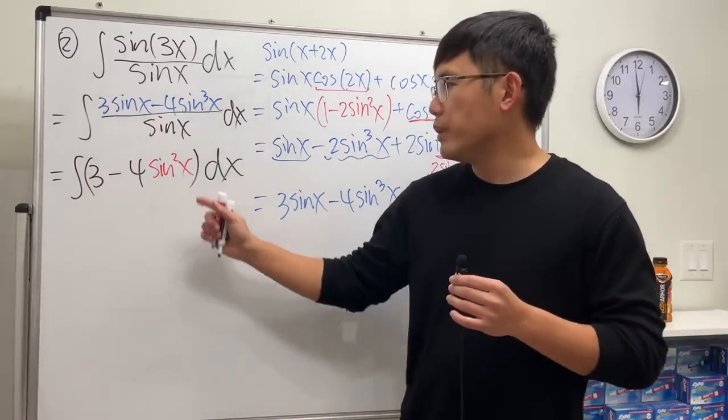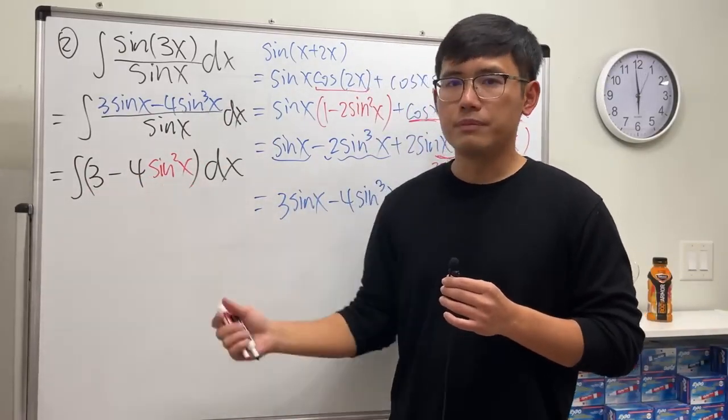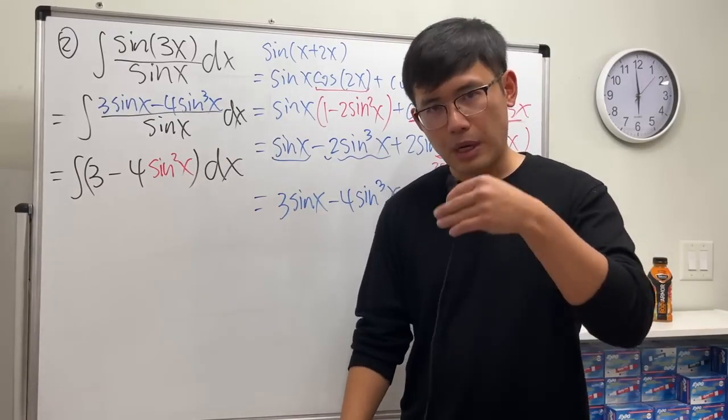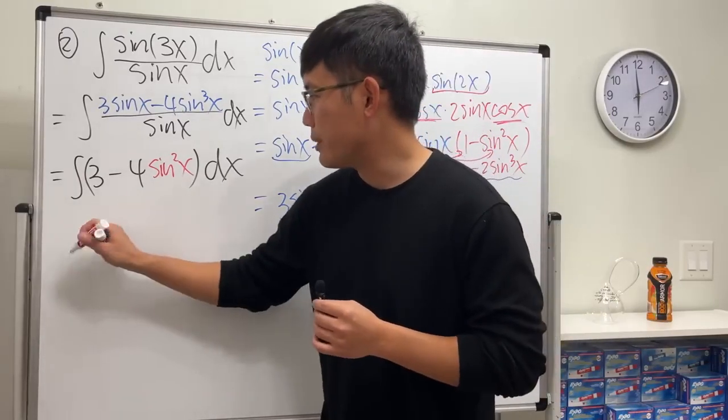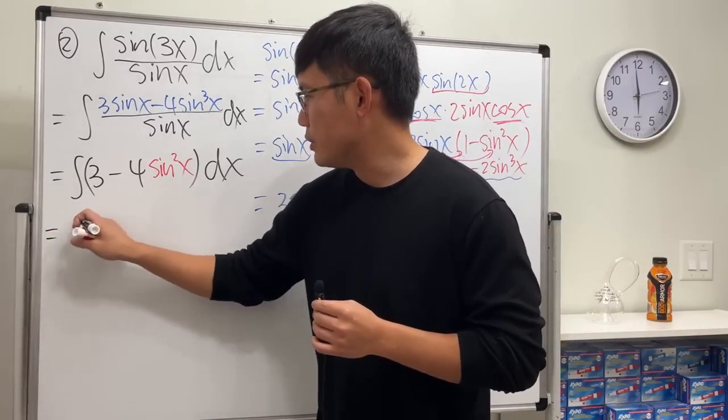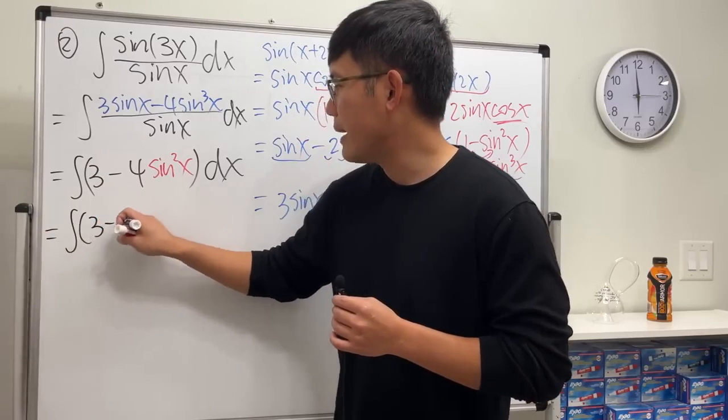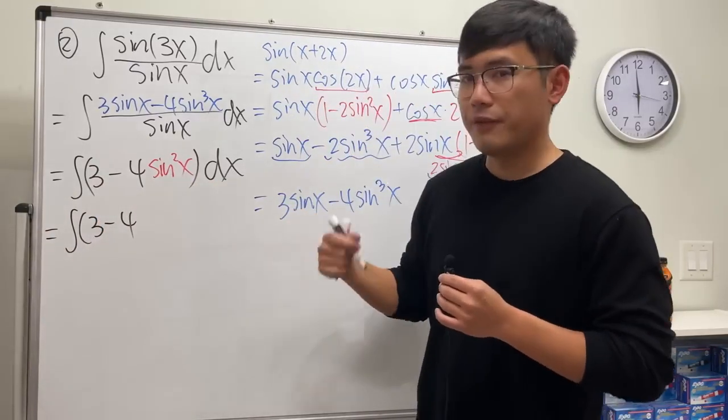Good. Integrating this is not so bad, but how do we integrate sine to the second power? We will have to use the power reduction formula for that. So before we do the integration, let me just replace that. I will still keep the 3, so we have the integral of 3 minus 4, but for the sine squared x right here...